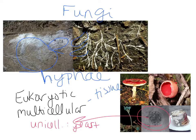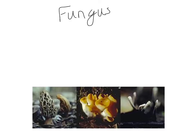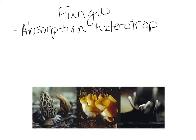Fungus does have a cell wall, and the cell wall in fungus is made out of chitin — pronounced 'ky-tin.' Their mode of nutrition makes them absorption heterotrophs. They don't have a mouth and don't actually eat anything. Instead, they secrete digestive enzymes and absorb the nutrients that way.